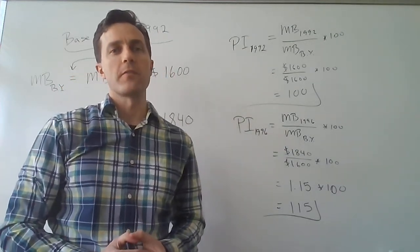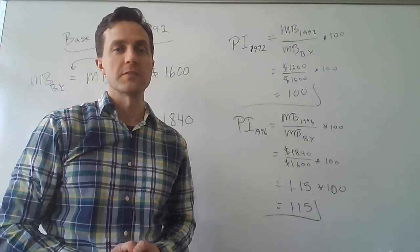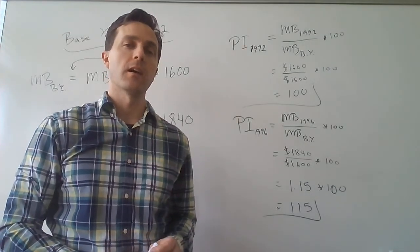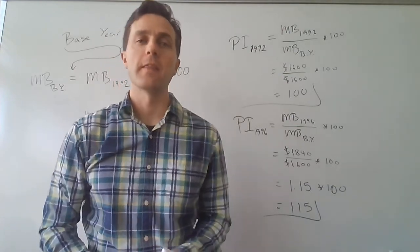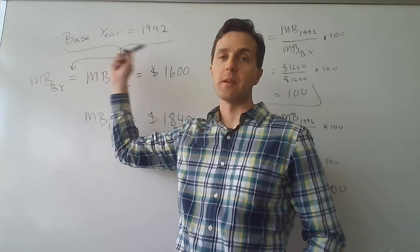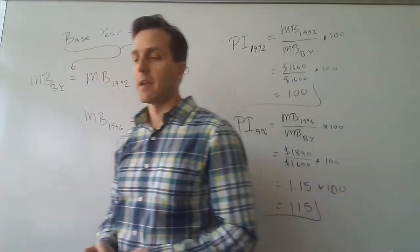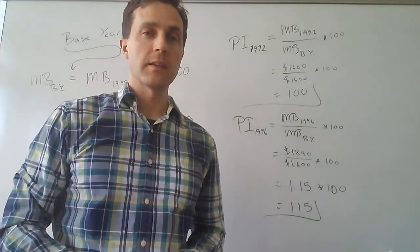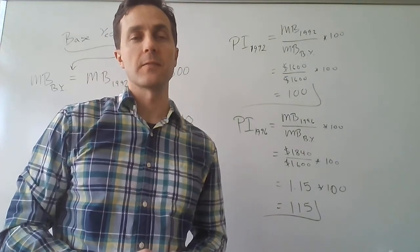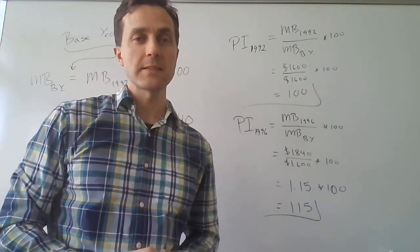Suppose we know the value of a price index in two different years, 1992 and 1996, and let's say we also know that 1992 happens to be the base year. In order to calculate the values of the price index for these two years, we need to know the values of the market basket for these two years.